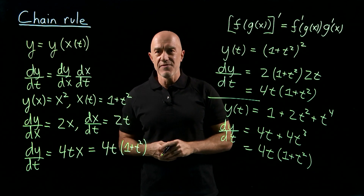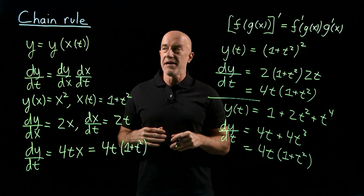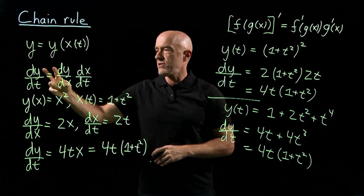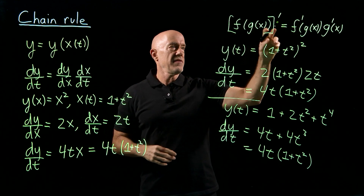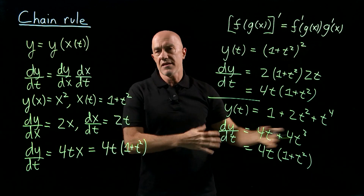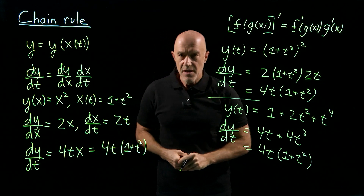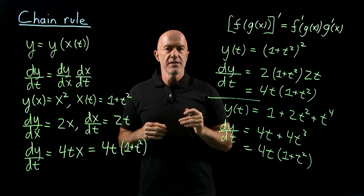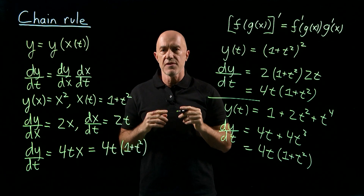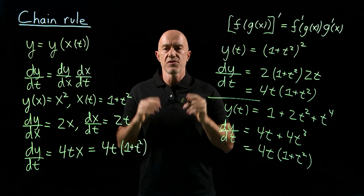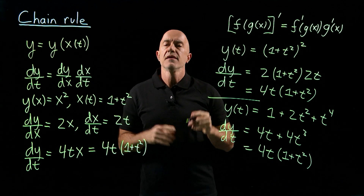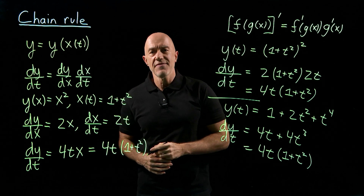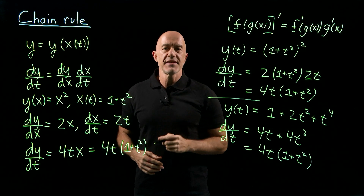So, more or less three different methods — the first two are the chain rule in the Leibniz notation and in the functional notation, and the last one is just expanding it. The key thing to remember from this video: to take the derivative of the composition of two functions, it's the derivative of the outside times the derivative of the inside. I'm Jeff Chasnoff. Thanks for watching, and I'll see you in the next video.